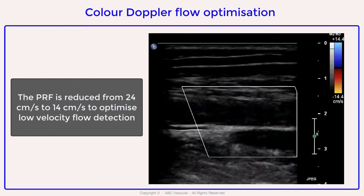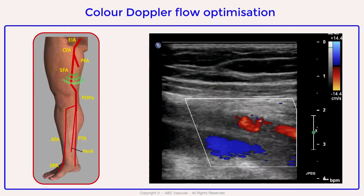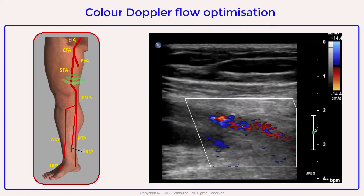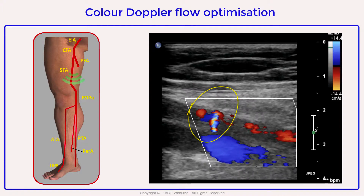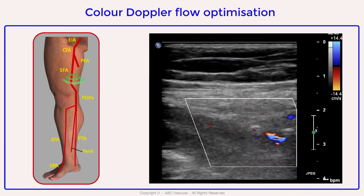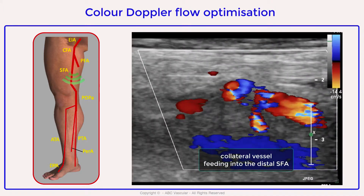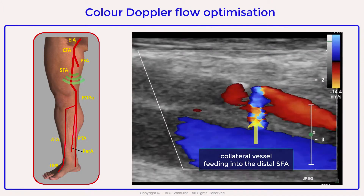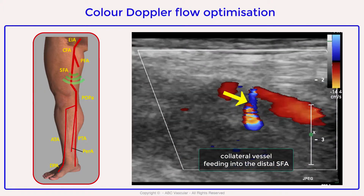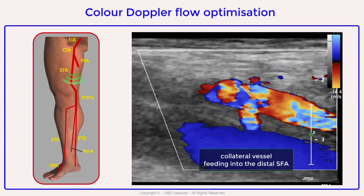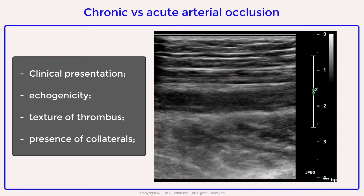We can see a segmental occlusion of the superficial femoral artery. As we move the transducer further down, we approach the distal part of the occlusion and can see that flow reforms at this level where aliasing is noted. The aliasing region indicates the presence of a large collateral vessel which reforms the flow at this level and feeds the distal region of the superficial femoral artery with arterial flow.